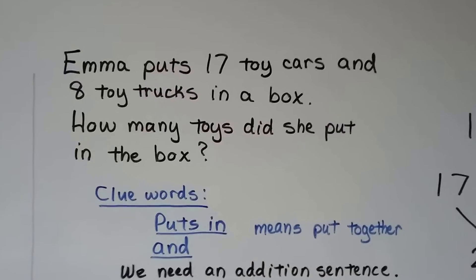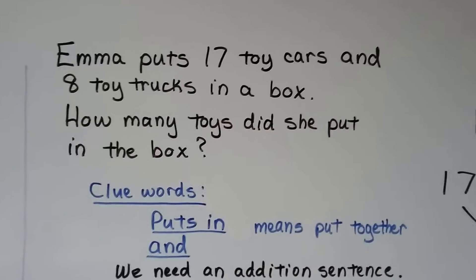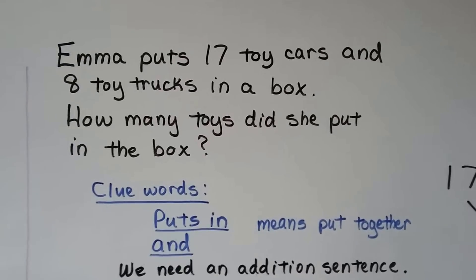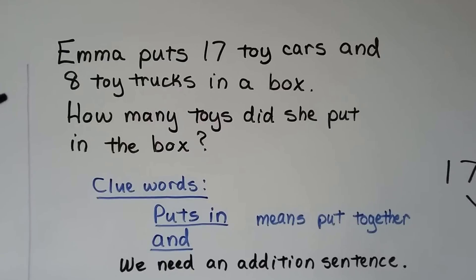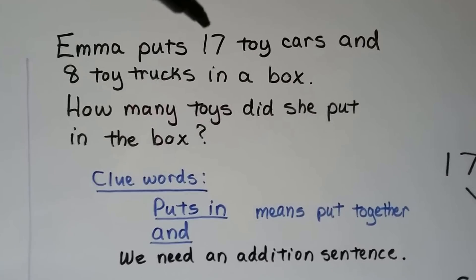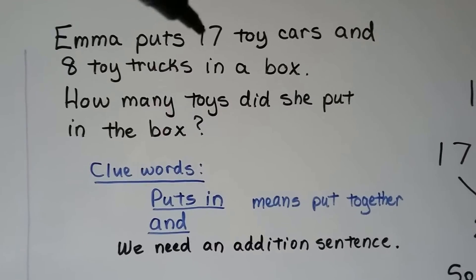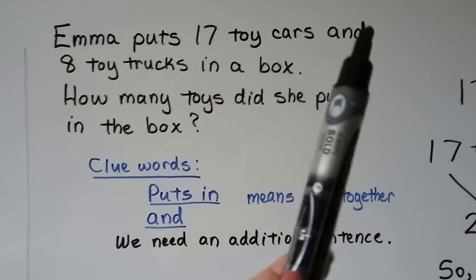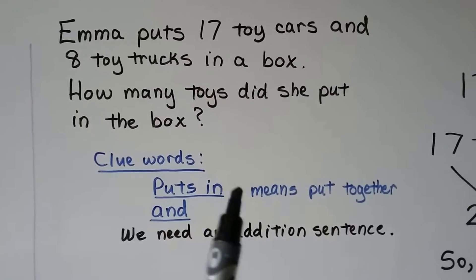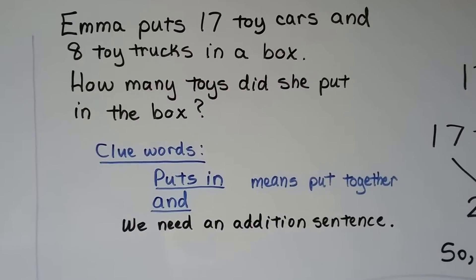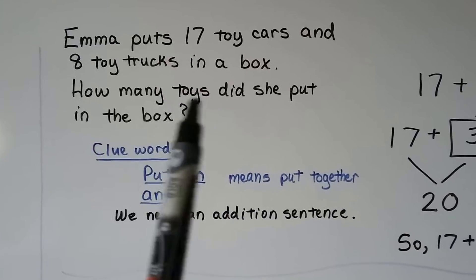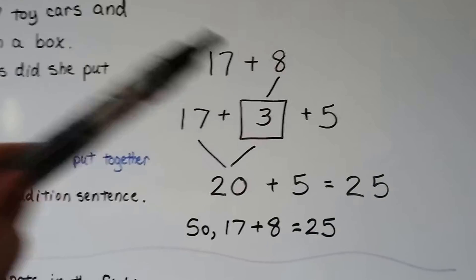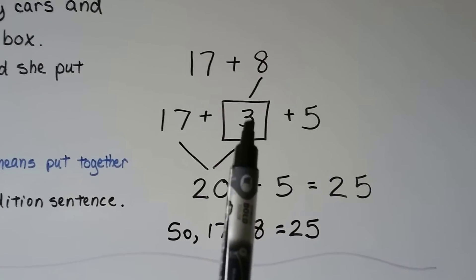Let's try a word problem. Emma puts seventeen toy cars and eight toy trucks in a box. How many toys did she put in the box? We need to figure out what they're asking and what information we can use. They're asking how many toys she put in the box. She puts in seventeen and eight. The word 'and' in between the seventeen and eight tells us they're being put together. That means we need an addition sentence.